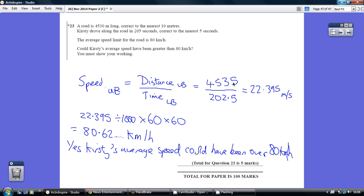4535 is the maximum distance to be divided by the smallest time. Well, 205 seconds correct to the nearest 5 seconds. For that to be as small as possible, 202.5 would round up to 205. So we've got 202.5 as our denominator.